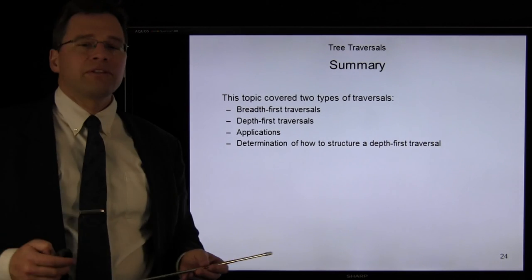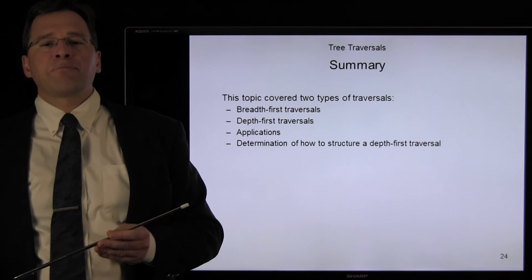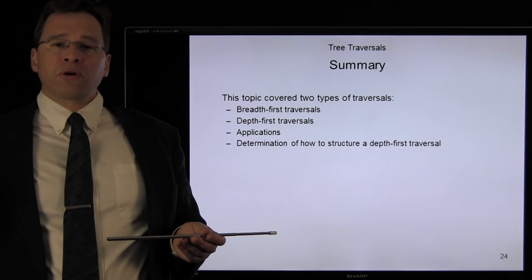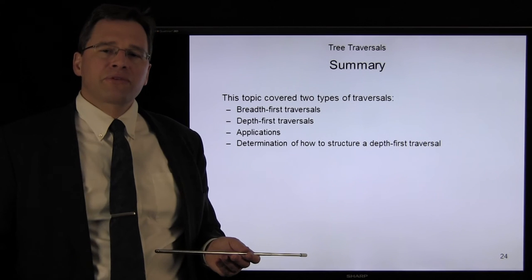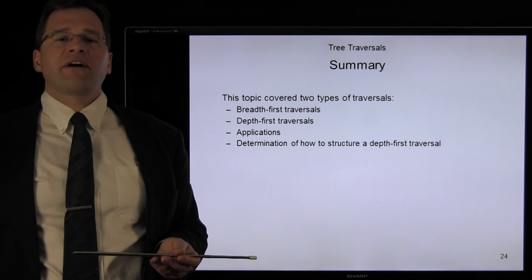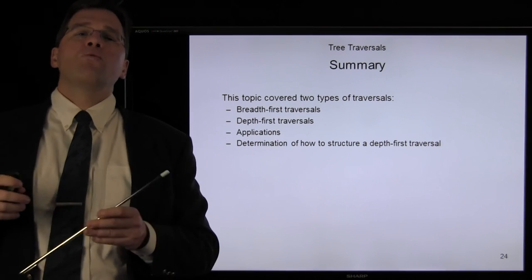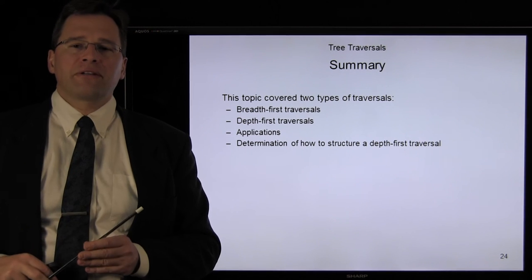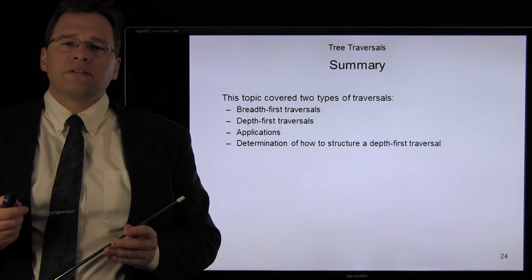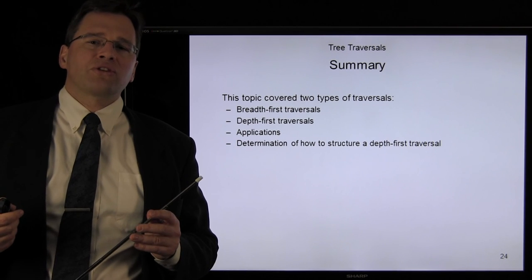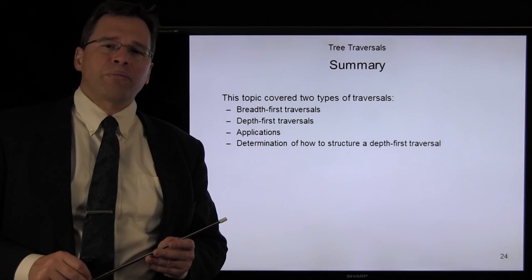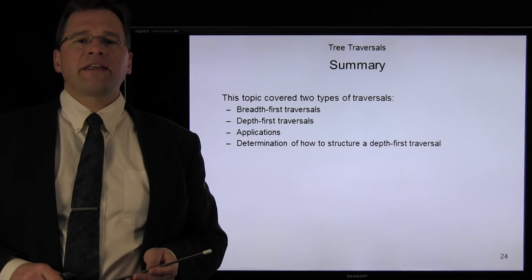In summary, we've covered two types of traversals: breadth-first traversal and depth-first traversal. A depth-first traversal is more complex — we use backtracking to step through the tree, and we must decide what information is needed by the children from the parent and its ancestors, and what information the children must return to the parent. We looked at several applications and determined how to structure a depth-first traversal by identifying what information is needed and what operations must be performed at each point. Thank you very much, and have a good day.